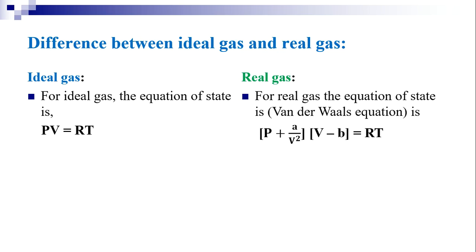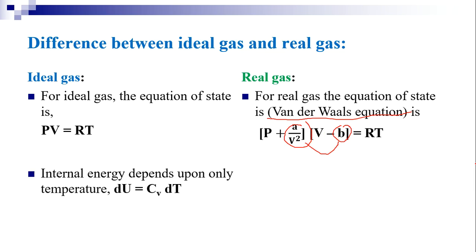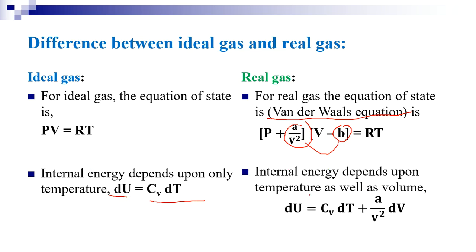For a real gas, the equation of state is a modified equation known as the Van der Waals equation, given by (P + A/V²)(V − B) = RT. These two correction terms will be discussed in the next slides. In case of an ideal gas, internal energy depends only on temperature: dU = Cv dT. For a real gas, internal energy also depends on volume: dU = Cv dT + (A/V²) dV, where Cv is the specific heat capacity at constant volume.